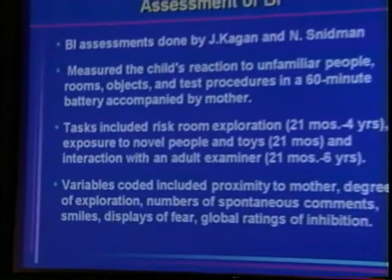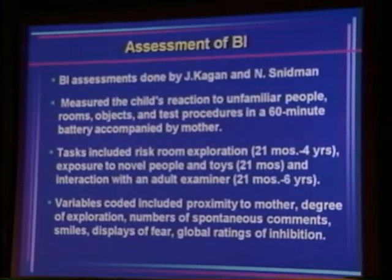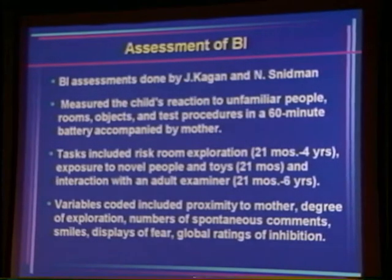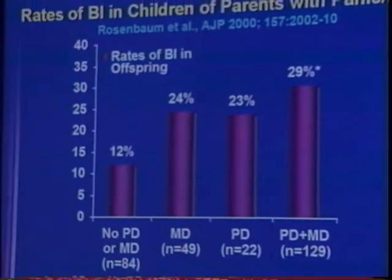The variables coded included proximity to mother, degree of exploration, and especially number of spontaneous comments and smiles. Having a normal control group allowed us to norm in defining BI — we could look at who actually spoke less than 80% of the offspring of normal parents to classify BI. What we found was that rates of behavioral inhibition were significantly higher in the group of parents with panic and depression, and this wasn't accounted for by comorbid parental social phobia.